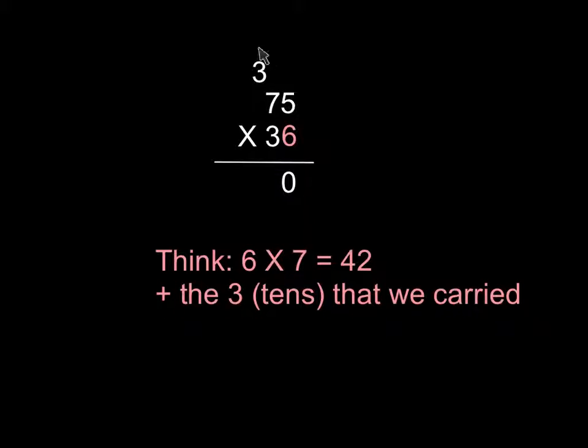But remember, you have to add the three tens that we carried, because really we're multiplying six times seventy, right? Just like we did before with the expanded algorithm.